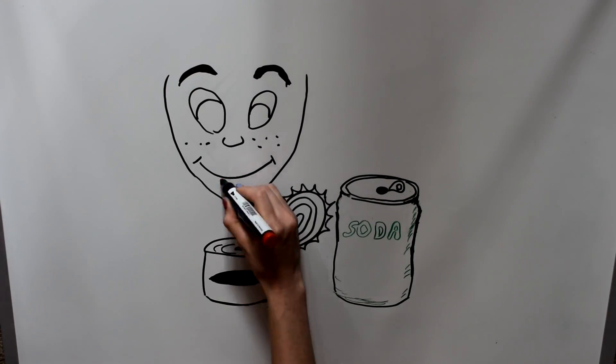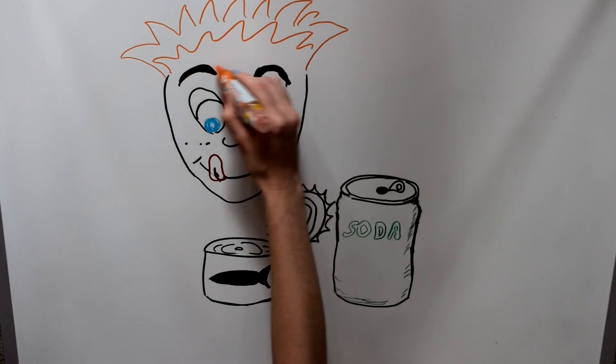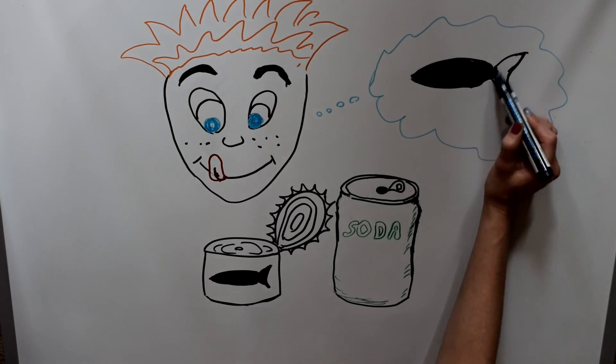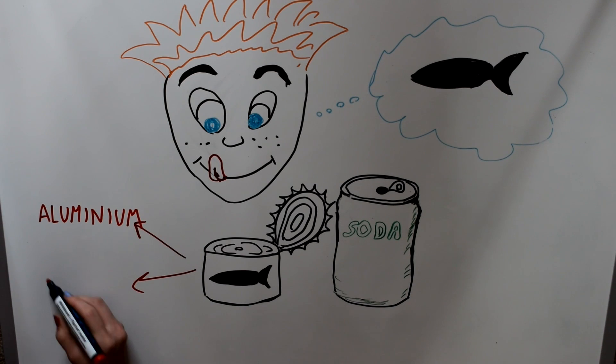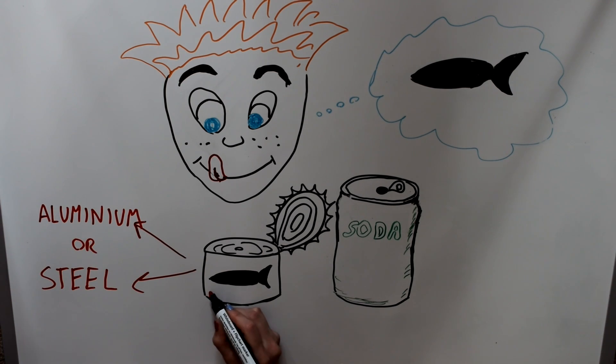However, we should all keep in mind that overeating canned food comes with a price. Food cans are basically made of aluminum or steel. The concerns come when the aluminum which the cans are made from interact with the food within the can and oxidizing it.